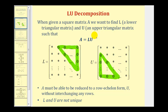In order for this product to be possible, A must be able to be reduced to row echelon form, which is matrix U, without interchanging any rows. We should also note that L and U are not unique.